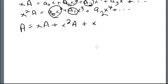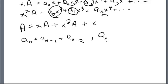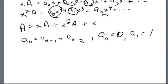So we've just transformed the recurrence relation a sub n equals a sub n minus 1 plus a sub n minus 2 with a₀ equals 0 and a₁ equals 1 into an algebraic equation of sequences: A equals xA plus x²A plus x. What we want to develop next is how to manipulate this algebraically to derive the sequence that satisfies this recurrence. We'll pick that up in the next lecture — thank you very much.